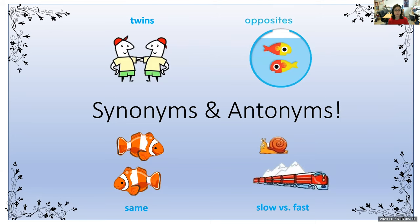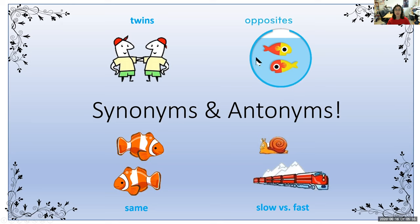So synonyms versus antonyms. Synonyms can be thought of as similar to each other — like twins, for example, kind of like the same. Synonyms have the same basic meaning, whereas antonyms are like opposites. Here we have a red and yellow fish and a yellow and red fish that look a little bit different — one has a yellow head, the other a red head. Or for example, slow versus fast: a snail is super slow, a train is super fast. Slow and fast are antonyms because they have opposite meanings.